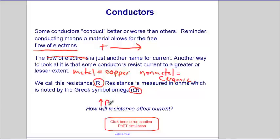If we increase the resistance, if we increase the opposition to the flow of charge, can you predict what happens to the current? The current will go down.